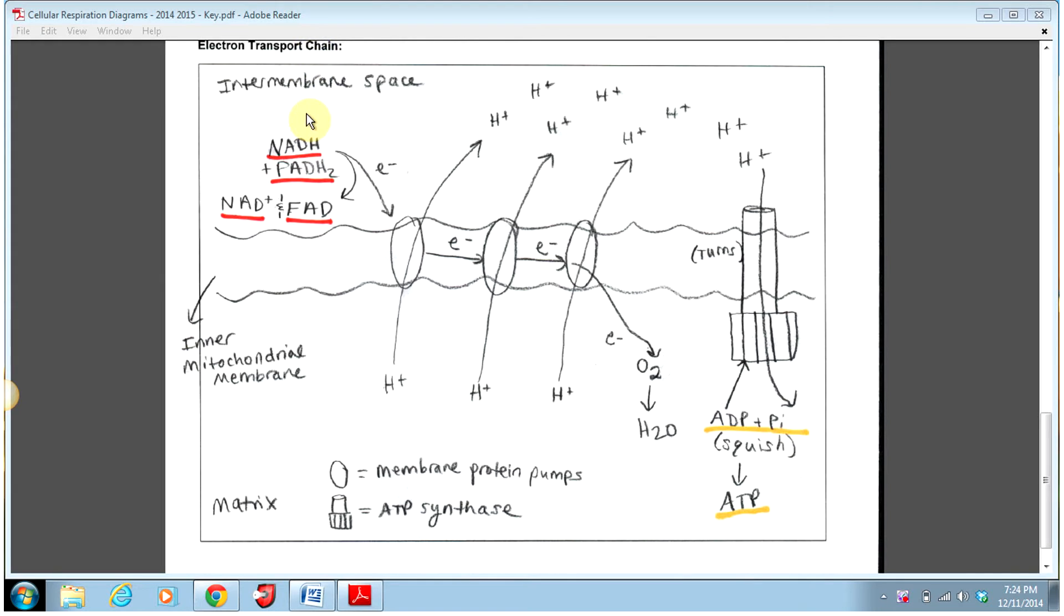The overall goal is to convert the energy from high-energy electrons that were carried to the electron transport chain by NADH and FADH2. We want to convert the energy in those electrons to the energy in ATP.